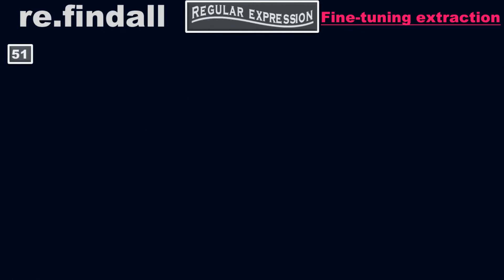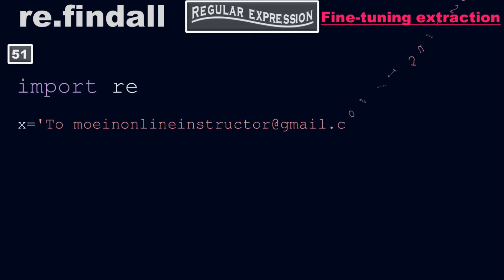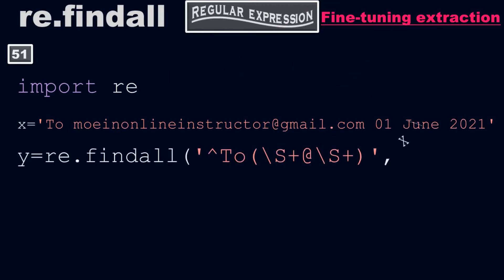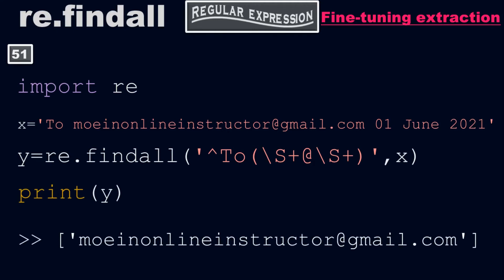Example number 51. Import the regular expression library again and take the same x value: moinonlineinstructor@gmail.com 1st June 2021. y equals to re.findall of caret 2, then opening parenthesis, backslash capital S plus, at the rate, backslash capital S plus, closing parenthesis, comma x. When you print y, it will return exactly the same output: moinonlineinstructor@gmail.com. This is another way of writing the regular expression.